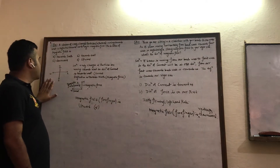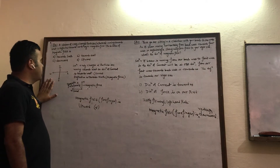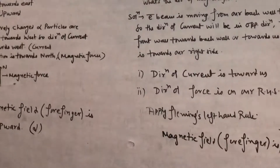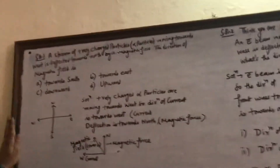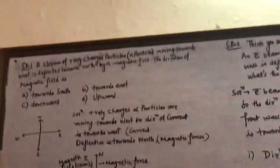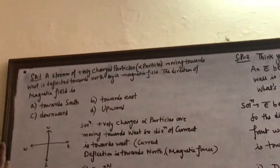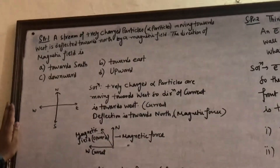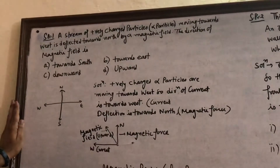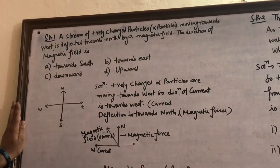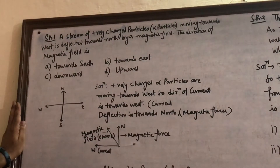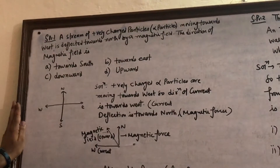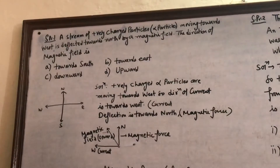The stream of positively charged particles moving towards the west is deflected towards the north by a magnetic field. What is the direction of the magnetic field? The options are: (a) towards south, (b) towards east, (c) downward, or (d) upward.